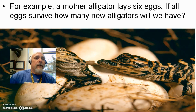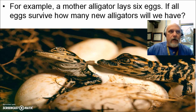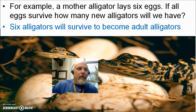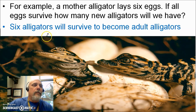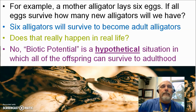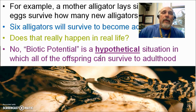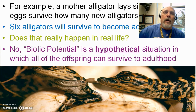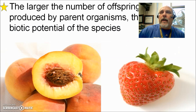A great example: if there is a mother alligator and she lays six alligator eggs, in an ideal situation all six of those eggs will hatch, all six baby alligators will live and survive long enough to become adults. So six alligator eggs will grow up to become six alligators — that is the biotic potential in this situation. Does that happen in real life? No, it doesn't always happen. This is a hypothetical situation. In real life, not all of them survive. A predator might eat one, one might die of disease, or there could be a genetic defect.